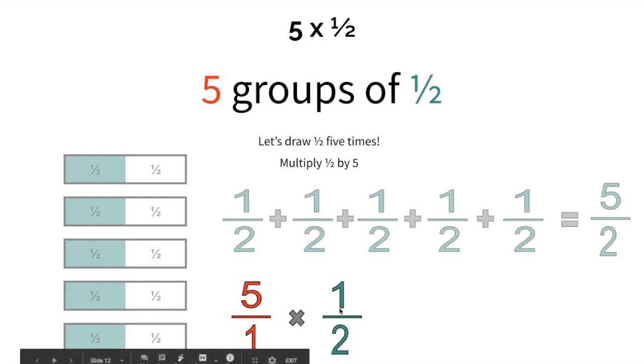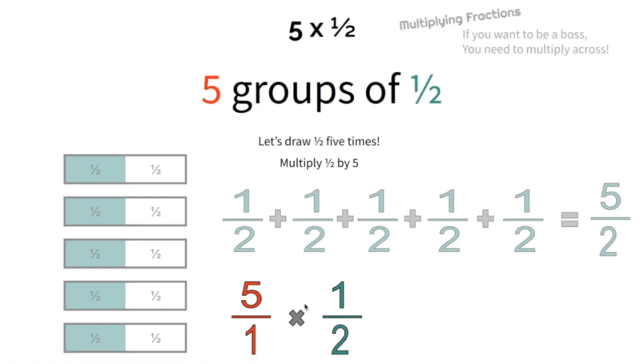and 1 half as a fraction also, we can just multiply straight across. That's right. If you want to be a boss, you got to multiply across. So we're going to do 5 times 1, and then 1 times 2. Well, 5 times 1, that's just 5. And then 1 times 2, that's just 2. So, the answer, 5 halves.